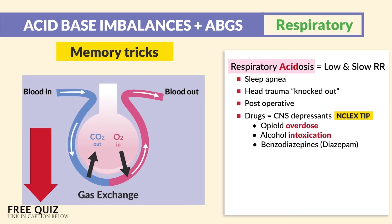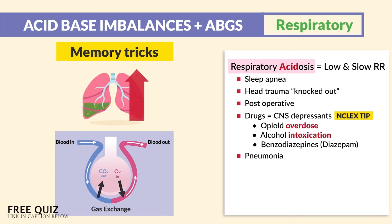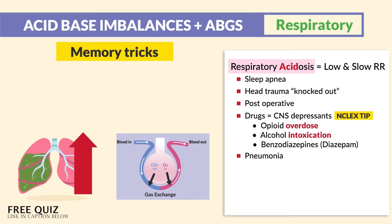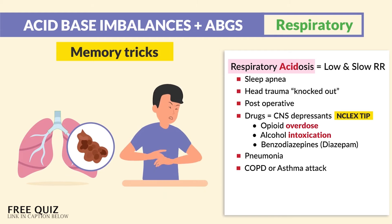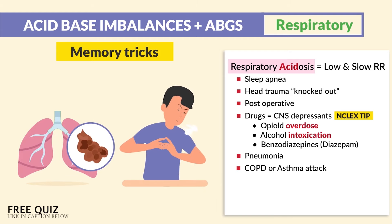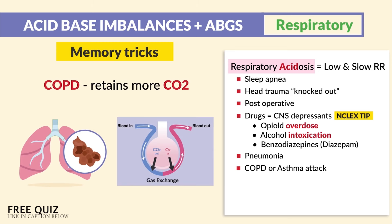We can also have impaired gas exchange from, say, pneumonia, where thick mucus builds up inside the lungs. If there's no good gas exchange, CO2 is retained in the body, making the blood more acidic. Similarly, COPD or asthma attacks impair gas exchange, so CO2 is retained. Just remember: COPD retains more CO2.